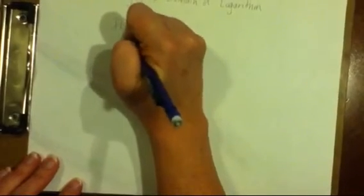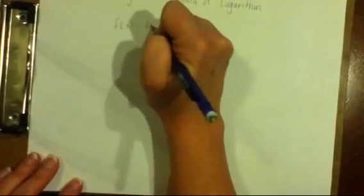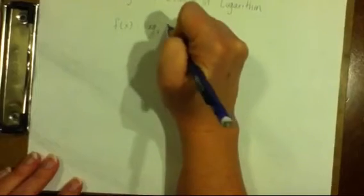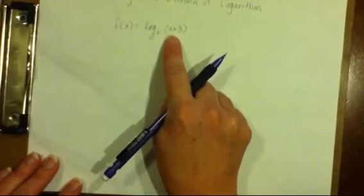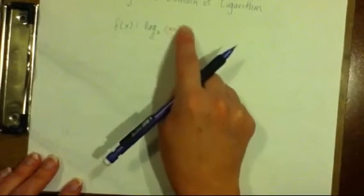So when you're finding the domain of a logarithm, for example, f(x) equals log base 2 of x plus 3, you have to remember that the part you're taking a logarithm of must always be greater than 0.